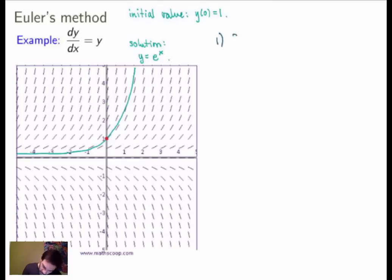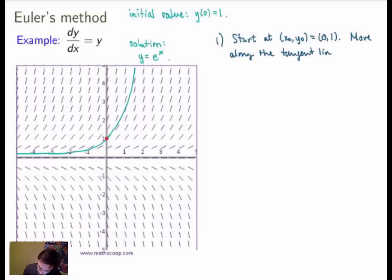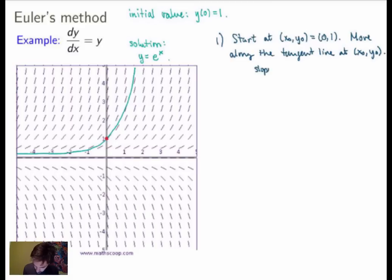How do we proceed? The first step is to start at the initial point (x₀, y₀), which in this case is (0, 1), and then move along the tangent line at this point. The slope of the tangent line is given by the right-hand side of the equation, which is the y-coordinate of the point. So the slope is y₀ = 1. The equation of the tangent line is y = slope times x plus the y-coordinate of the original point, giving us y = x + 1.